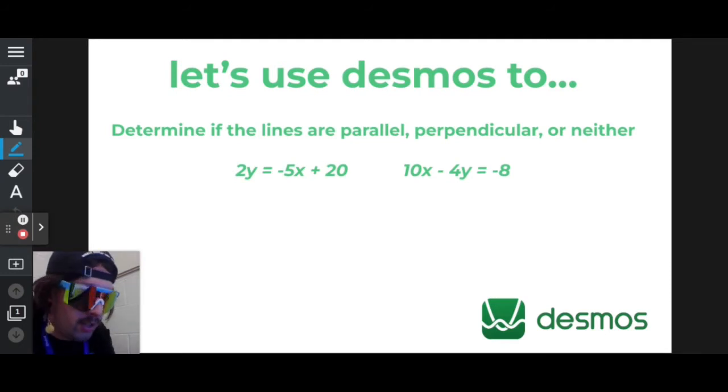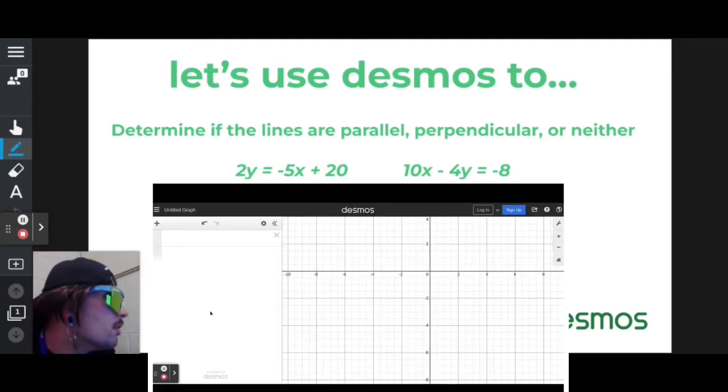I wonder how it's done. So we have to figure out if the two lines that I was given are parallel, perpendicular, or neither. Let's just type them right in and see what we get.